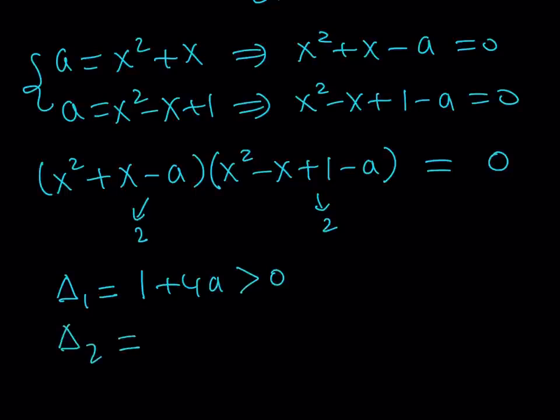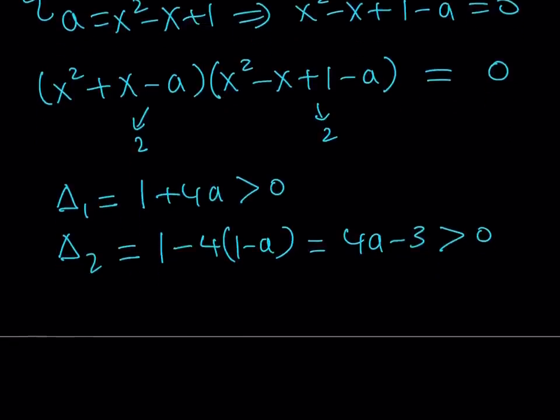Delta 2 is going to be B squared, which is 1, minus 4AC. And that's going to be minus 4 times 1 minus A. And that can be written as 4A minus 3. And we also want that to be greater than 0.